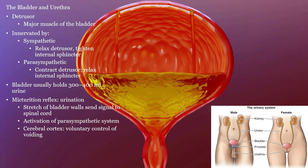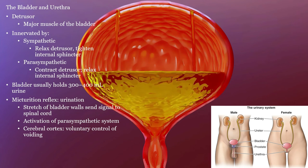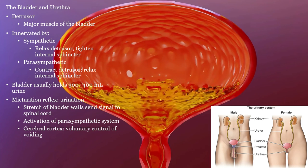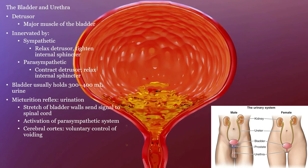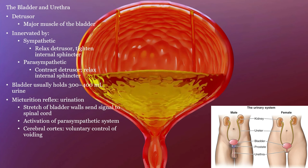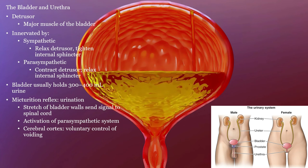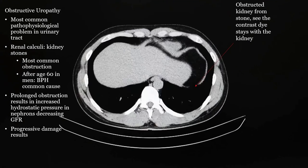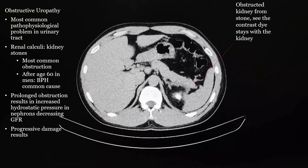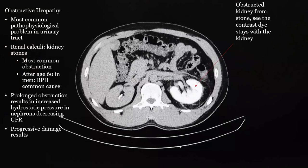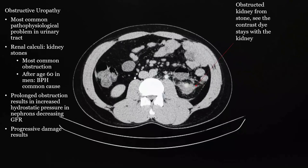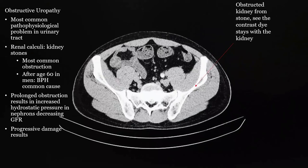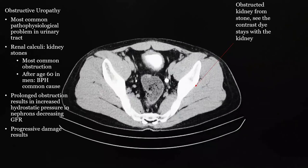The bladder is used to store urine until it is ready to void. The detrusor muscle is the major muscle of the bladder. It is innervated both sympathetically and parasympathetically. There is also voluntary control when we go to void, but there are involuntary parts as well that can cause incontinence. Obstructive uropathy is a common problem due to ureteral stones from the kidneys. Prolonged obstruction can cause hydronephrosis and hydroureter, which can cause damage to the kidney. As the CT progresses, you can see the kidney with contrast remaining in it due to the obstruction of a kidney stone.